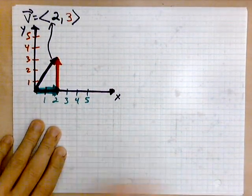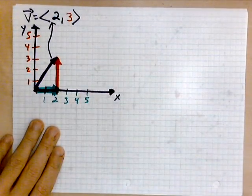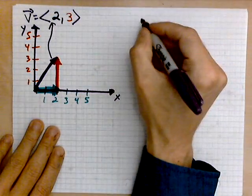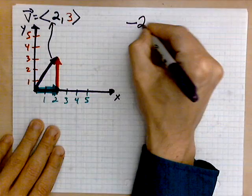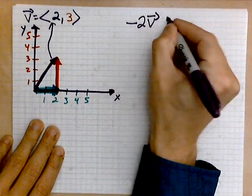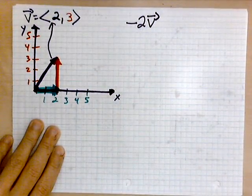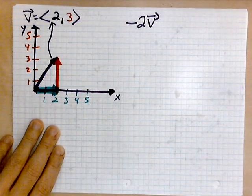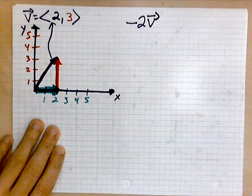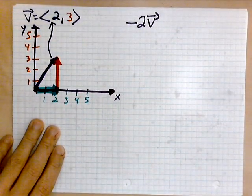Now that we have this in place, we are going to perform the following operation: negative 2v. Okay, where do we begin? Well, first step,